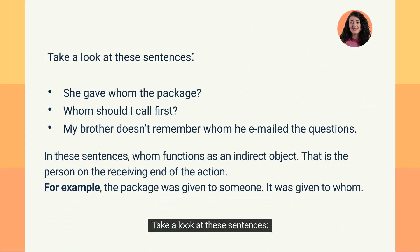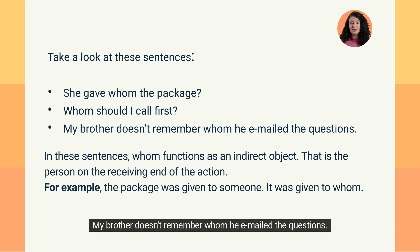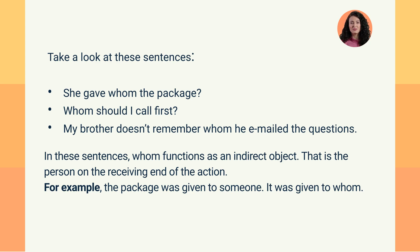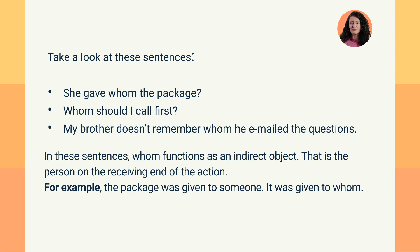Take a look at these sentences. She gave whom the package? Whom should I call first? My brother doesn't remember whom he emailed the questions. In these sentences, whom functions as an indirect object — that is, the person on the receiving end of the action. For example, the package was given to someone; it was given to whom.